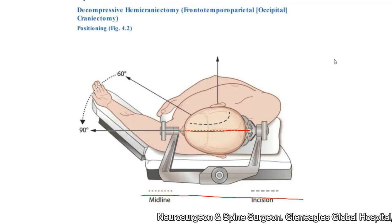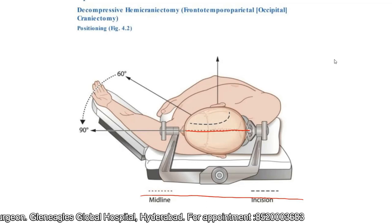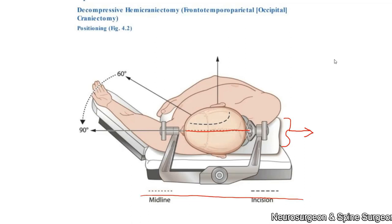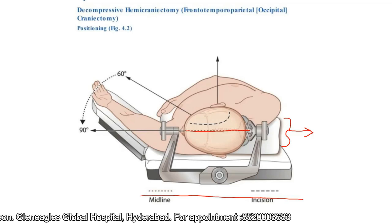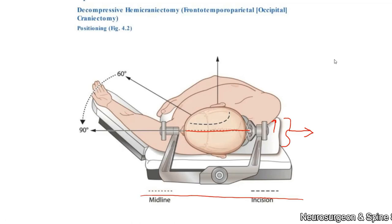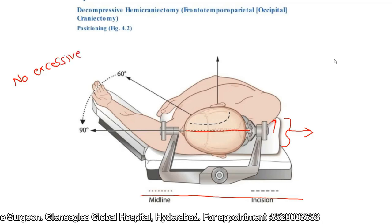To facilitate this head rotation, depending on the body habitus of the patient and flexibility of the neck, you can use a rolled-up pillow or a shoulder rest. We use a sandbag in our setting, of appropriate thickness, so that the torso rotates a bit and the ipsilateral shoulder is raised, allowing you to easily rotate the head to the opposite side. While achieving this 90-degree rotation, ensure there is no excessive twisting of the neck.